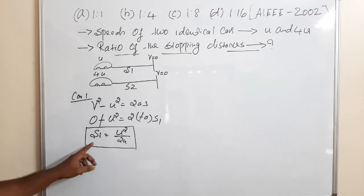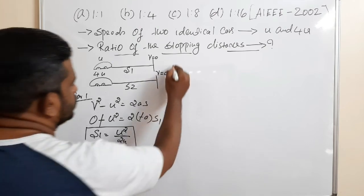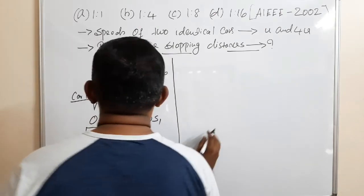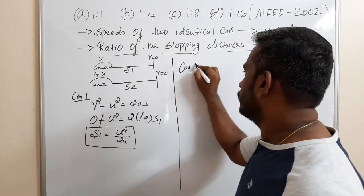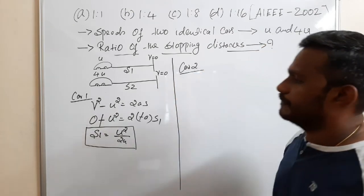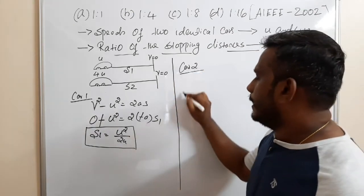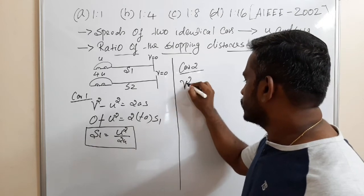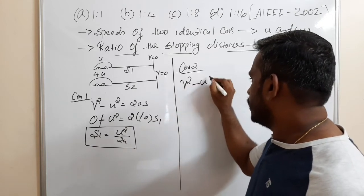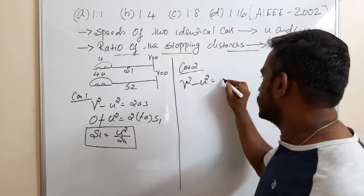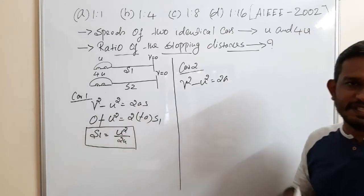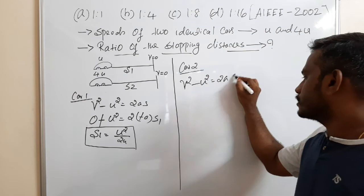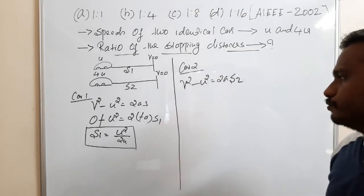So S1 is equal to u² divided by 2A. That is the stopping distance of the first car. Now for car 2, I am using the same equation v² minus u² equals 2A. The acceleration is the same as that of the first car, because both are identical cars.